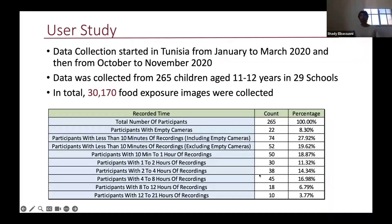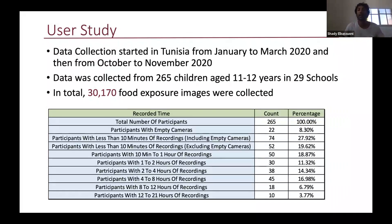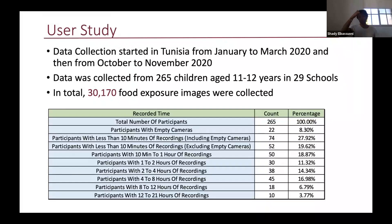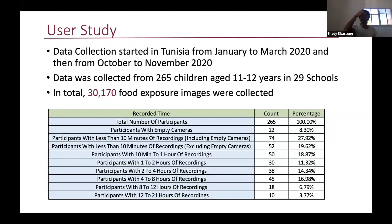We then took the full tool — wearable cameras, machine learning model, face blurring and all — and applied it in an actual user study in Tunisia and Lebanon, focusing on Tunisia here. Data collection in Tunisia happened from January to March 2020, then stopped for a bit due to COVID, and field work continued from October to November. Data was collected from 265 children aged 11 and 12 years across 29 schools — 27 public and 2 private. After applying the machine learning model and filtering out non-food images, we ended up with over 30,000 food exposure images.